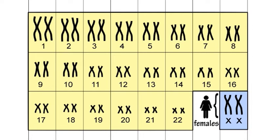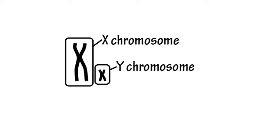In females, the sex chromosomes are made up of a matching homologous pair of X chromosomes. In males, there is a non-matching pair consisting of one X chromosome and a Y chromosome that is quite different.